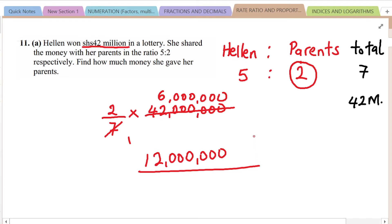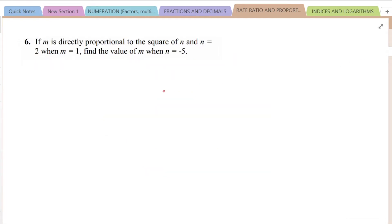Moving on to the next number. If M is directly proportional to the square of N and N is 2 when M is 1, find the value of M when N is negative 5. This is a number on proportion.